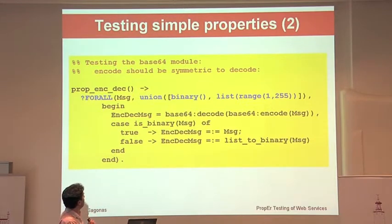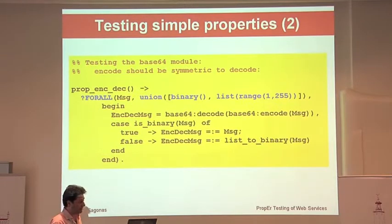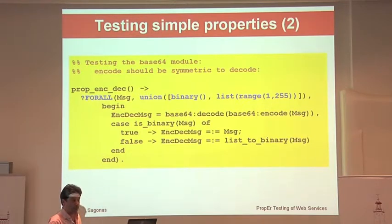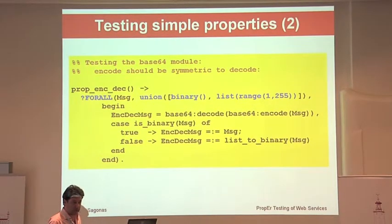You can also write generators explicitly. Another property says that for all messages — either binaries or lists of ASCII characters — if you encode and decode the message using Erlang OTP's base64 module, you get back essentially the same message. If it's a binary, you get the same message back; if it's a list, decode always returns a binary. Running this for 100 tests finds no counter-examples.